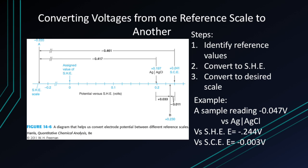It is useful to be able to convert voltages from one reference scale to another. The steps are: first, identify the reference values — the SHE, the silver-silver chloride, and the SCE. Then convert to the SHE scale, and from there convert to the desired scale. For example, reading −0.047 volts on the silver-silver chloride scale: to convert to SHE, subtract 0.197 volts to get −0.244 volts. Then to convert to the SCE scale, add 0.241 volts to get −0.003 volts.